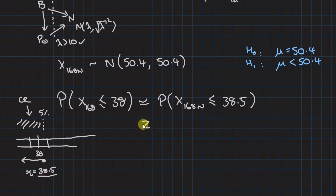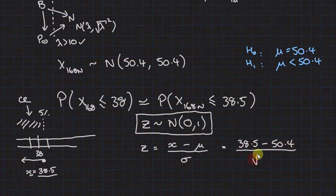So now we need to calculate. z is a normal distribution. z comes from my x minus the mean divided by sigma. Remember sigma is the square root of 50.4. So my z value, my critical point, or the value we are testing, is 38.5 minus 50.4 divided by the square root of 50.4.